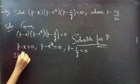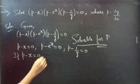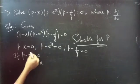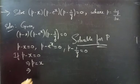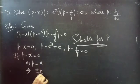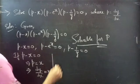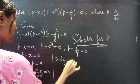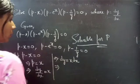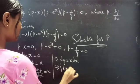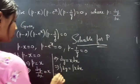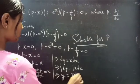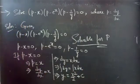If P minus X equals to 0, then P equals to X. Now put P equals to dy by dx. From this we will get dy equals to X into dx, where variables are separable.